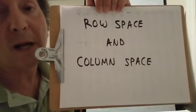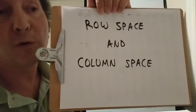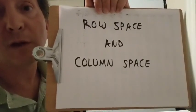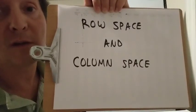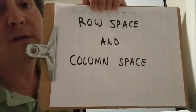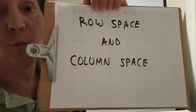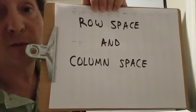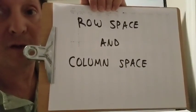If we have an m by n matrix, the rows of that matrix can be looked at as vectors in Rn, and the columns can be looked at as vectors in Rm. We can ask what subspace of Rn the rows span, and what subspace of Rm the columns span. Those two subspaces are called the row space and column space of the matrix.